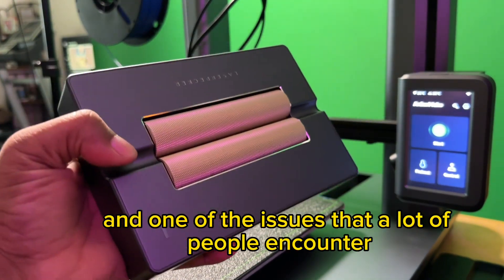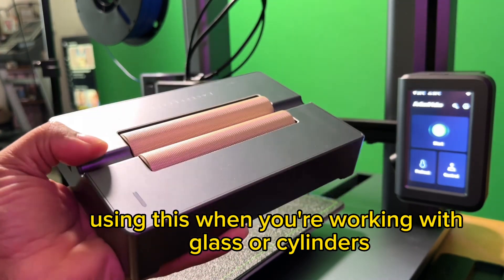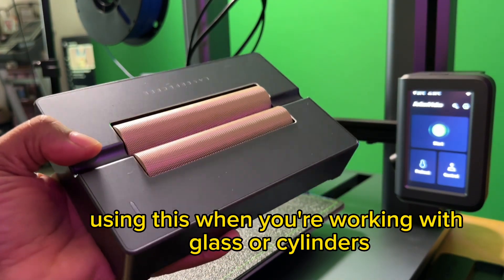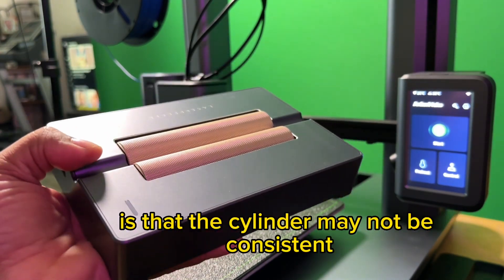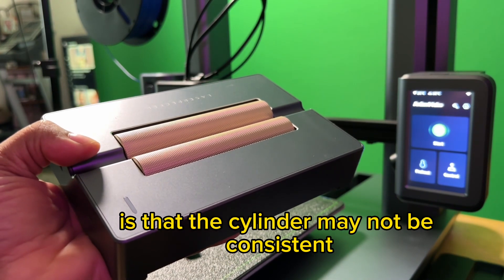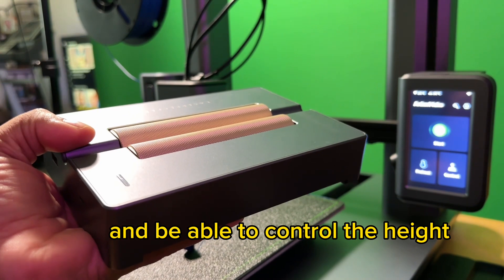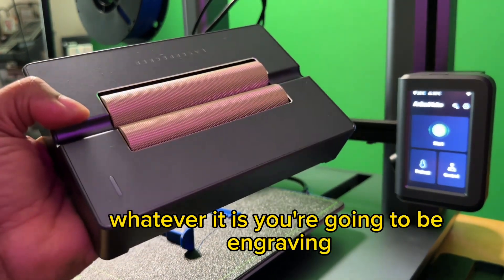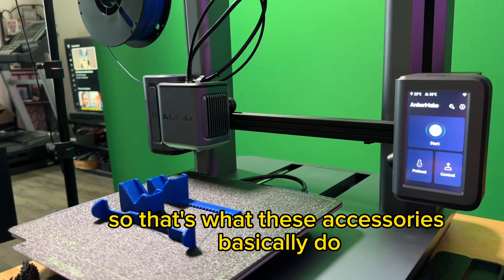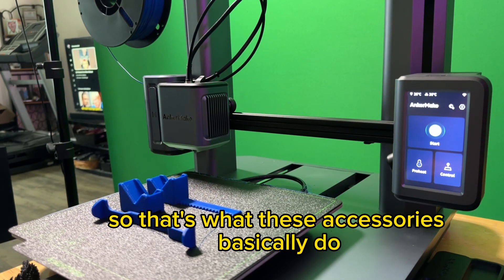And one of the issues that a lot of people encounter using this when you're working with glass or cylinders is that the cylinder may not be consistent all the way across and you need to elevate it and be able to control the height so that you can level out whatever it is you're going to be engraving. So that's what these accessories basically do.